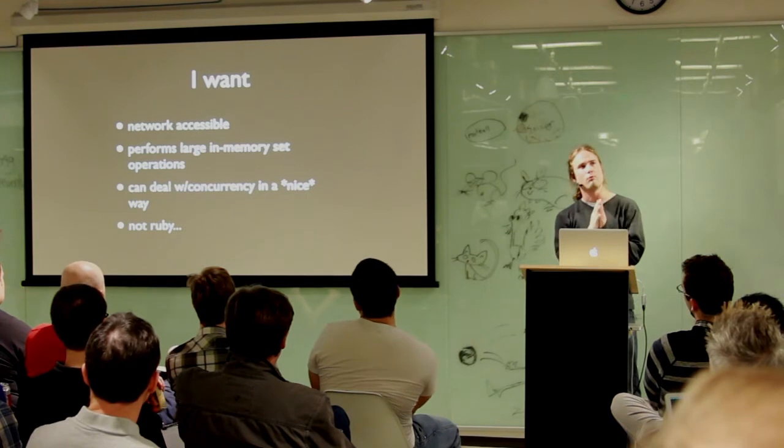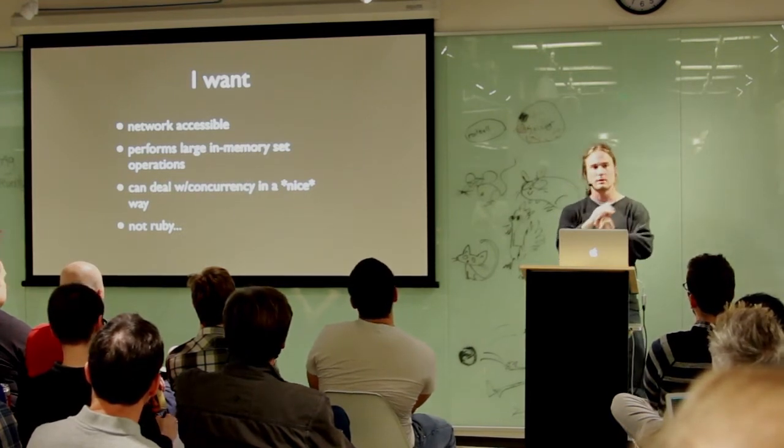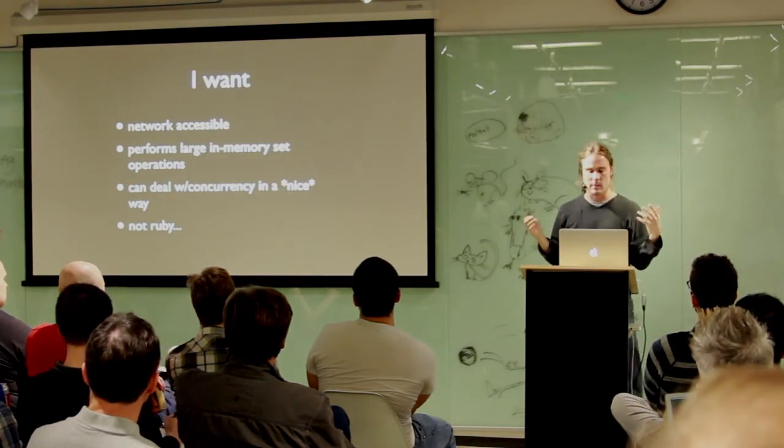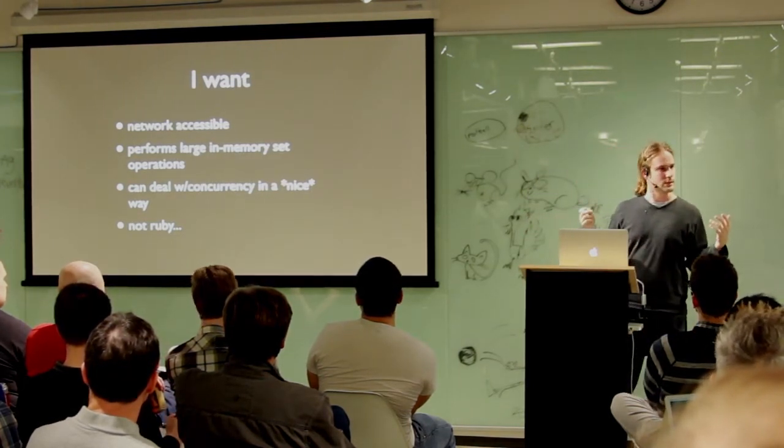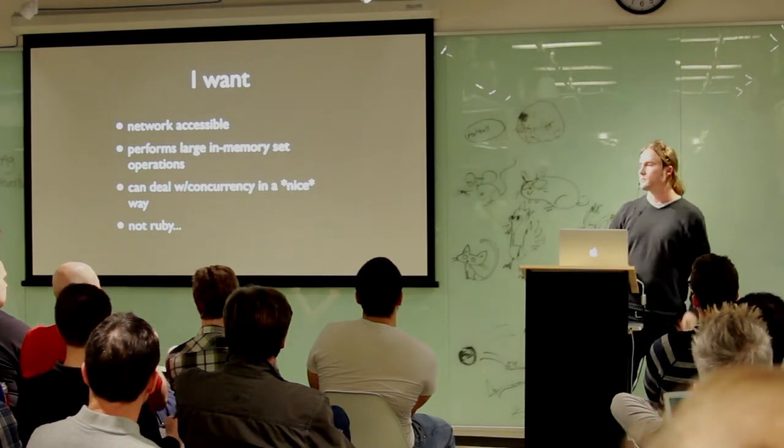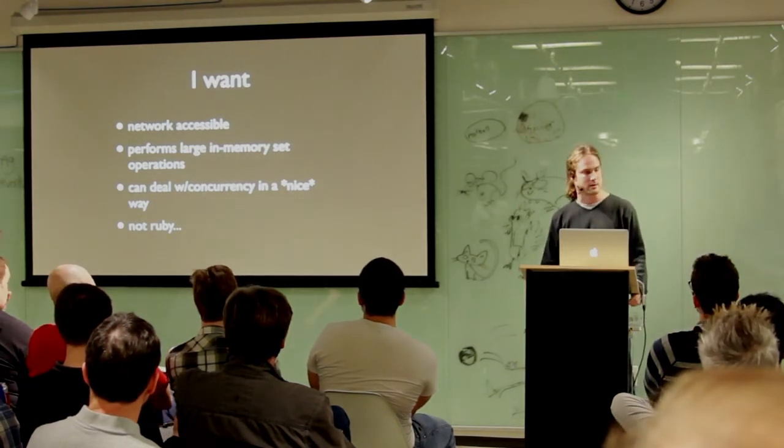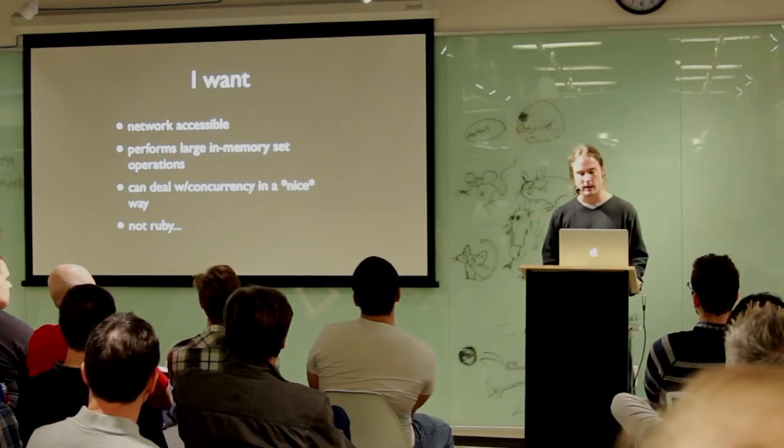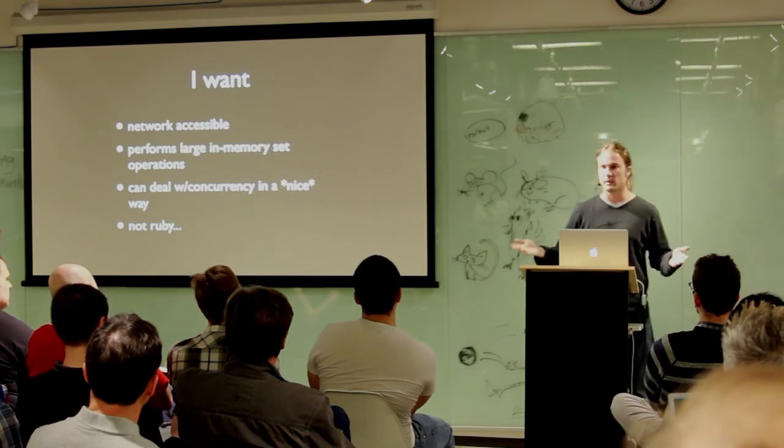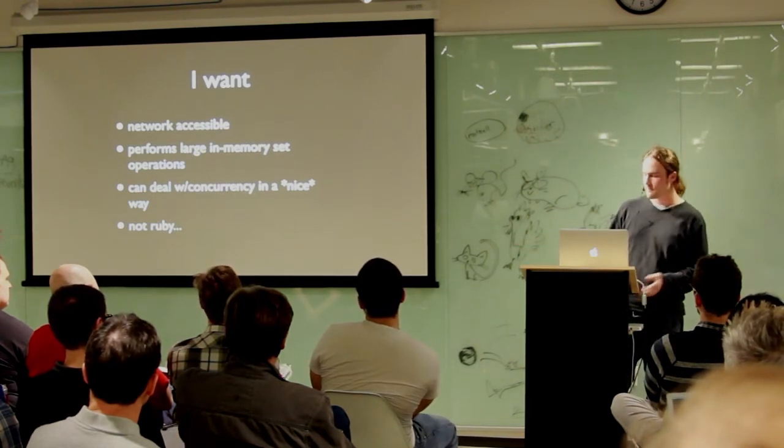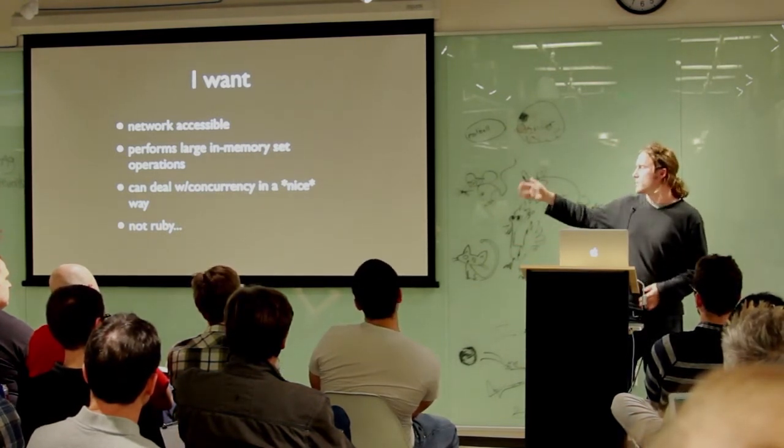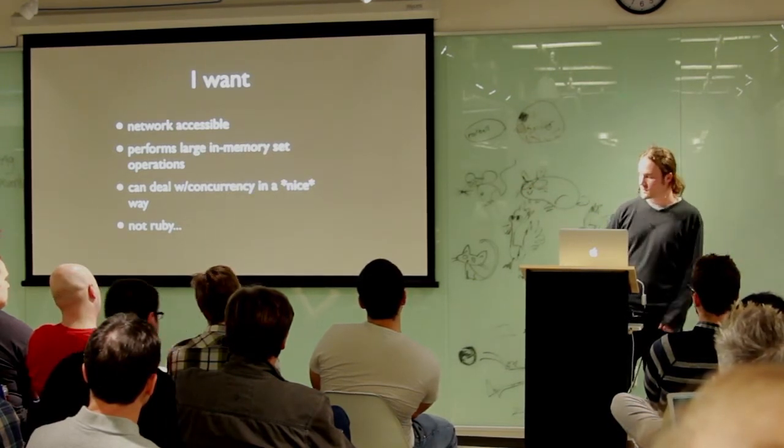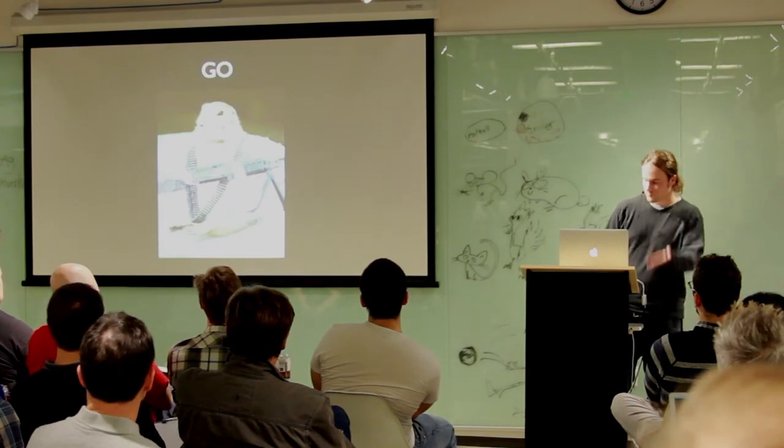So what did I want to achieve here? I wanted a networkable daemon, obviously. It needs to perform these large in-memory data set operations: you're anding, you're oring, you're xoring, you're notting, all this stuff. It needs to deal with concurrency in a really decent manner. I don't want to just sit there and go into template hell. Obviously not Ruby. Most of the code in our shop is Ruby. There's a portion of C++, portion of Objective C, all that sort of stuff. So we go, Go.